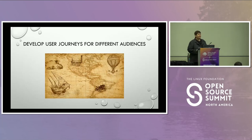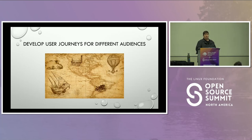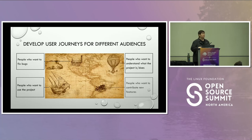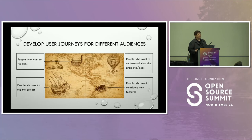There are different sorts of users who will come in and use our project: people who want to understand what the project does, people who want to use it, people who want to fix bugs, and people who want to contribute. Develop a separate user journey for each of these different audiences in your documentation or on your website, so that regardless of where a person enters, they can find the right path for them.